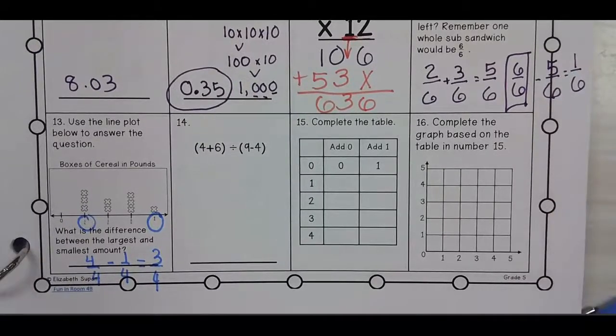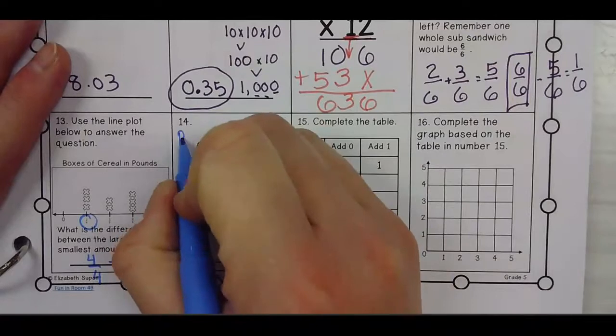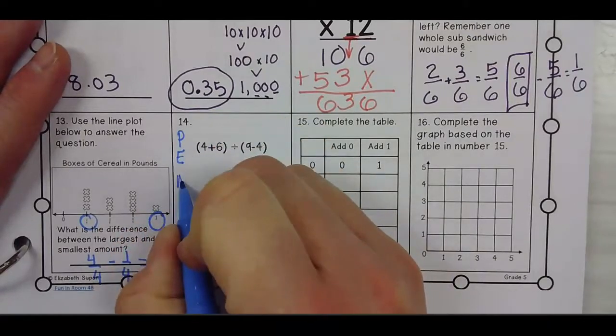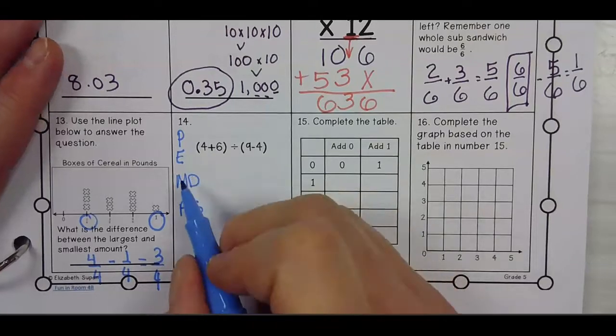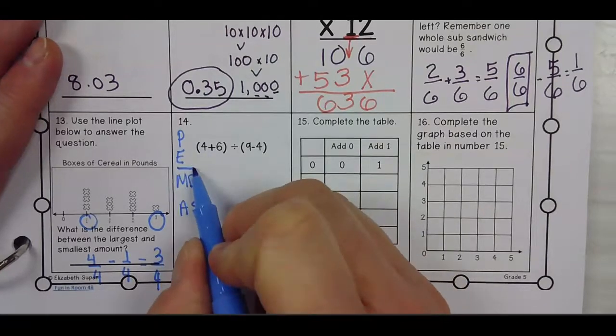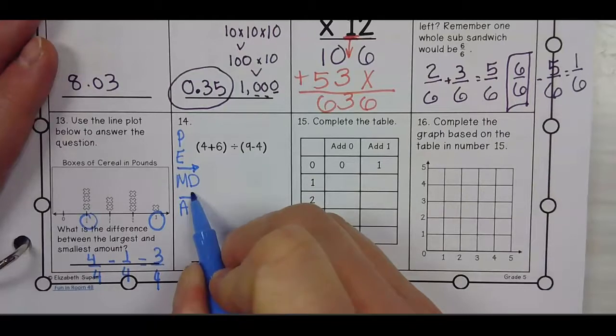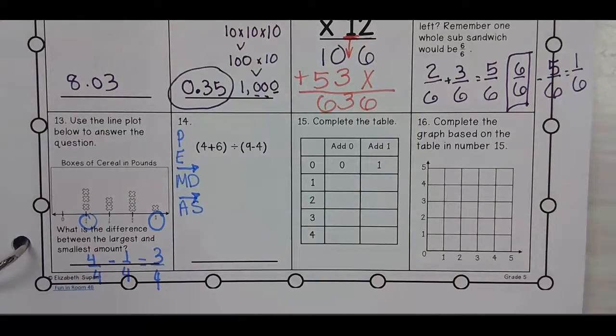Number 14. Remember, we're going to do please excuse my dear Aunt Sally. So we're going to do multiplication, division, left to right, addition and subtraction, left to right. What do we do first?